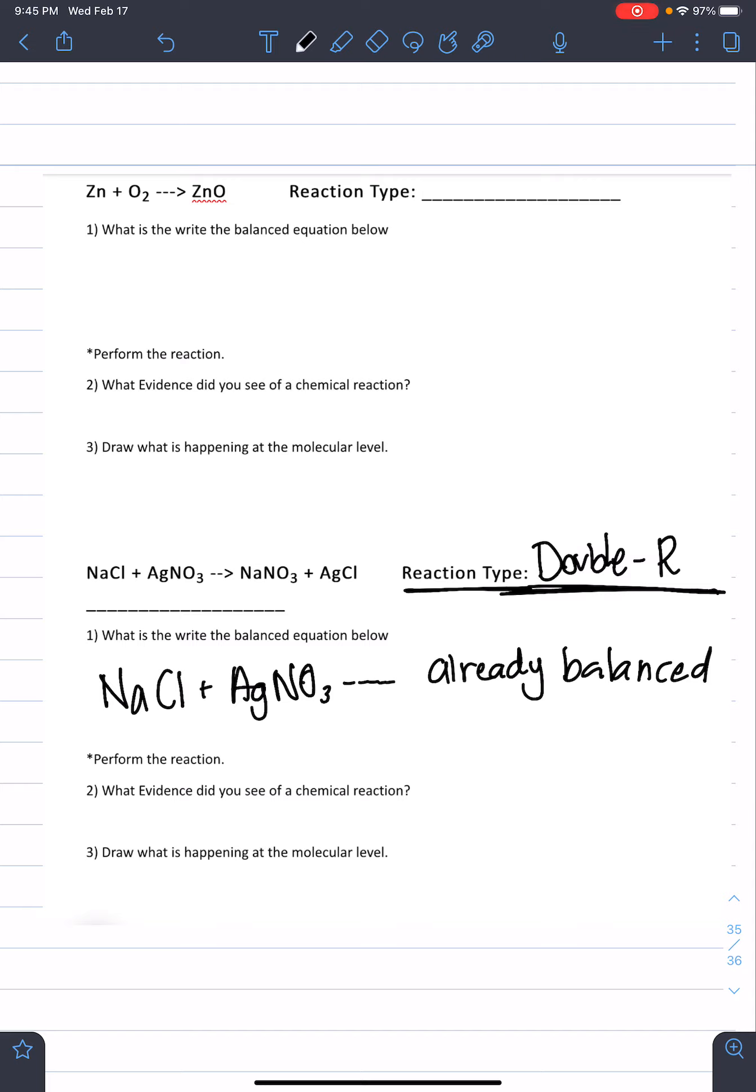The next thing says to perform the reaction. So, this is where you watch the video that I've done. So, you can watch the video to see the reaction. And then, number 2, you need to put the evidence. So, for example, this NaCl, AgNO3. If you watch the video, you'll see, like, a color change. You'll also see a solid form. So, things like that you'll put down at the evidence.